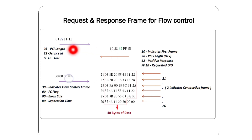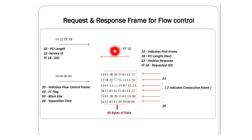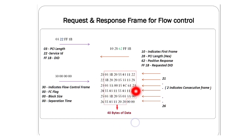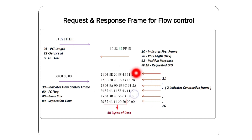When the ECU sees that first frame, it understands and sends back the flow control: 30 00 00 00 00 00 00. Whatever our developers have programmed, we get that response. Then we have to send the remaining data in consecutive frames — prefetched in script blocks. Once all data has been written successfully, you will get the response 03 6E FF 1B.